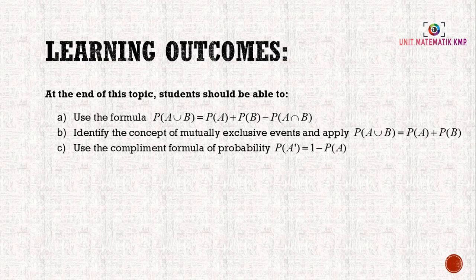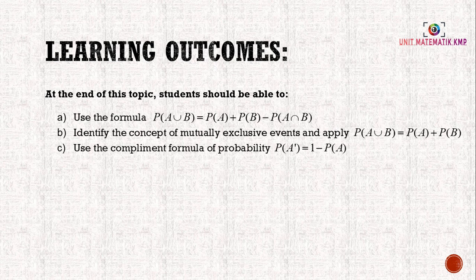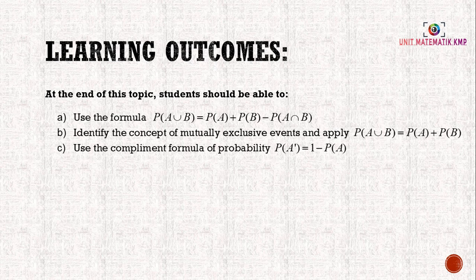Learning outcomes. At the end of this topic, you should be able to: use the formula P(A ∪ B) = P(A) + P(B) - P(A ∩ B), identify the concept of mutually exclusive events and apply P(A ∪ B) = P(A) + P(B), and use the complement formula of probability P(A') = 1 - P(A).